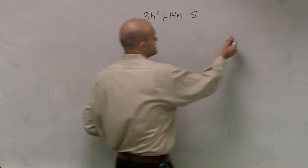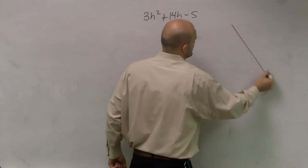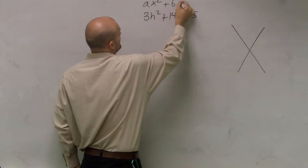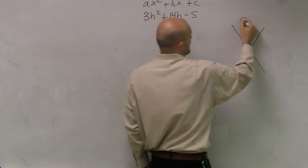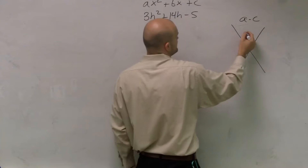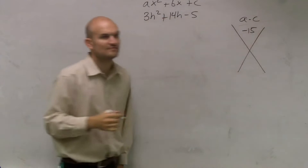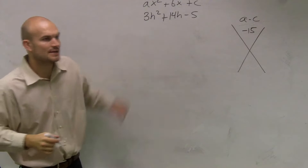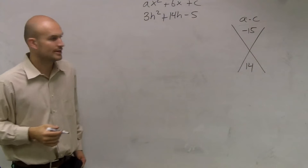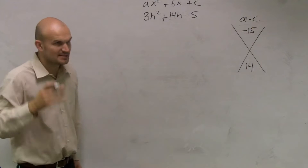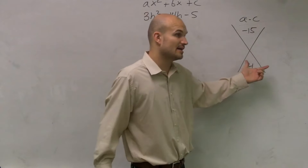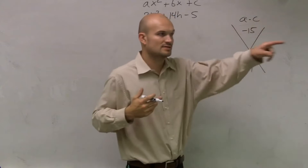So automatically I'm going to go through my X method. Remember this is AX² + BX + C. Up top, A times C, which is 3 times negative 5, which is negative 15. Then I go to my B, which is going to be a positive 14. Now I need to think: what two numbers multiply to give me negative 15 but add to give me positive 14?